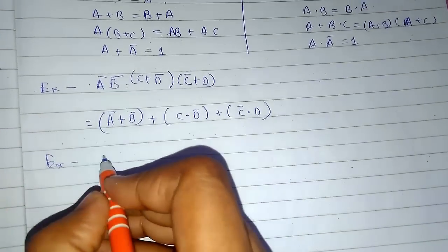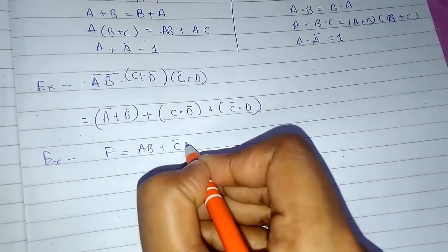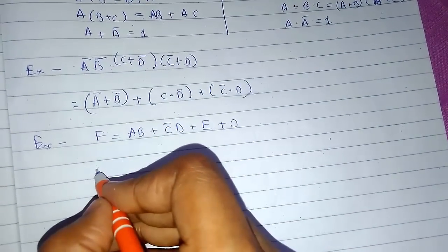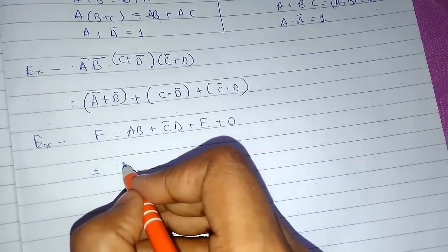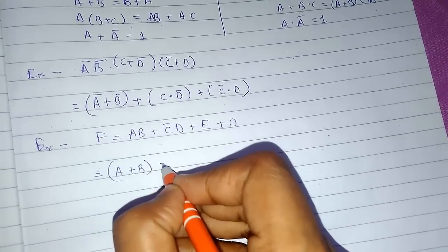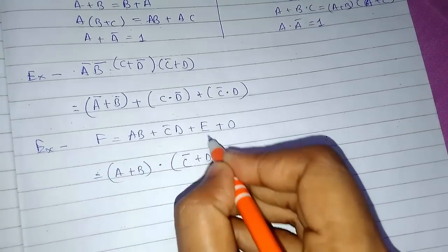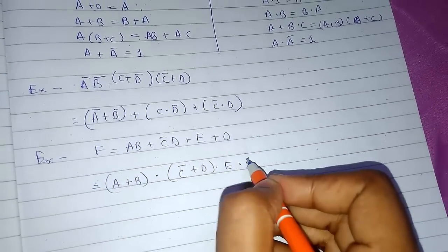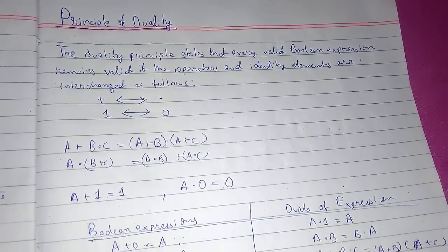Another example: suppose we have a function f equals a b plus c d plus e plus zero. We need to find the dual of it. Directly I am writing, for this it will be a plus b. Here it was plus so it changes to dot, c dot changes to plus, dot e, dot one. So it changes to one. This is how you find the duality of Boolean expressions.